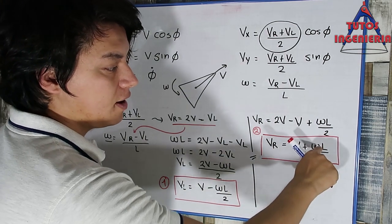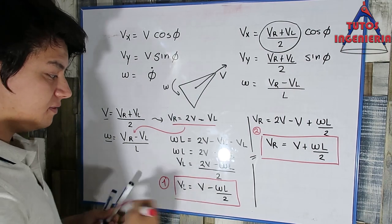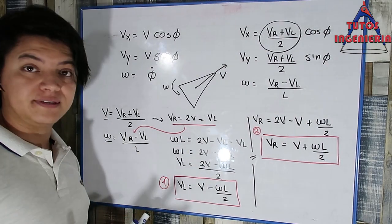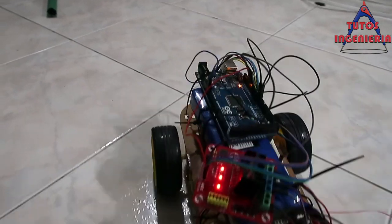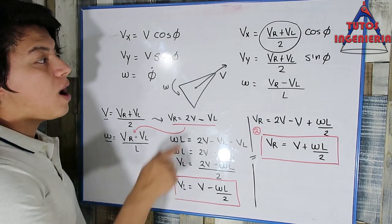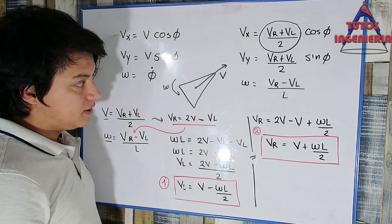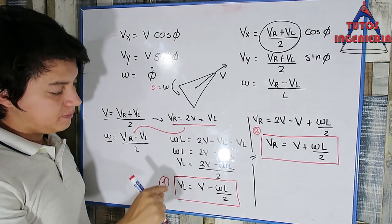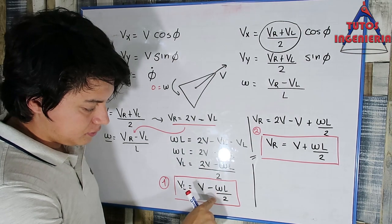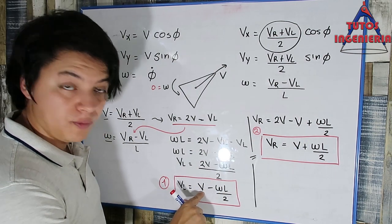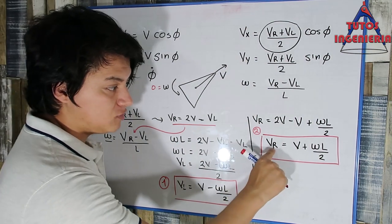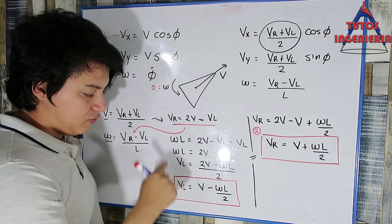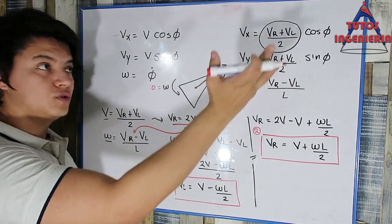These are the wheel velocity equations we are going to implement in the system. If we want the car to go in a straight line, we set omega equal to 0. In that case, the omega terms vanish, and V_L equals V and V_R equals V. Both wheels have the same velocity, so the car travels in a straight line.